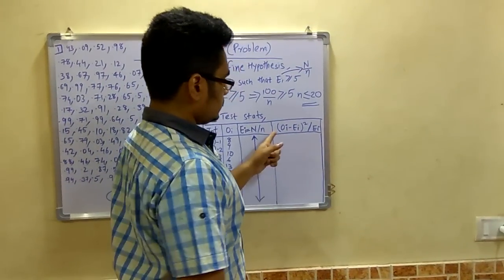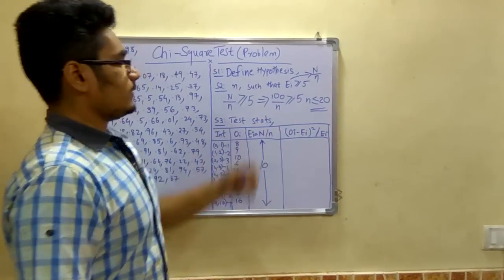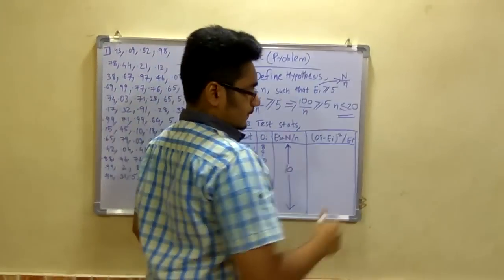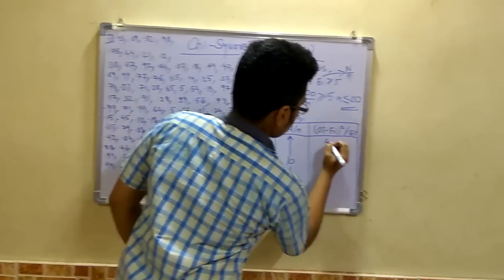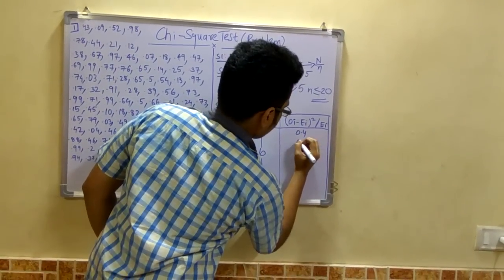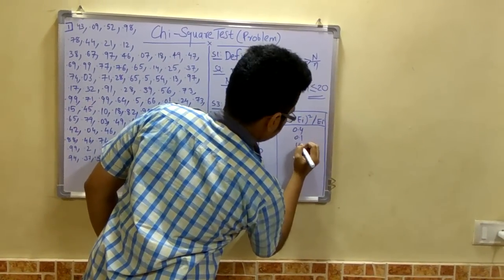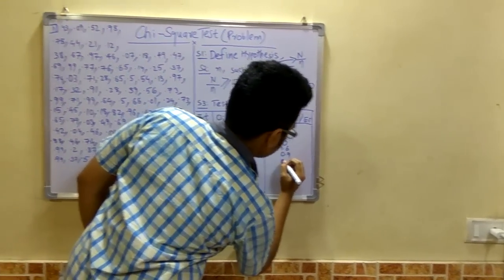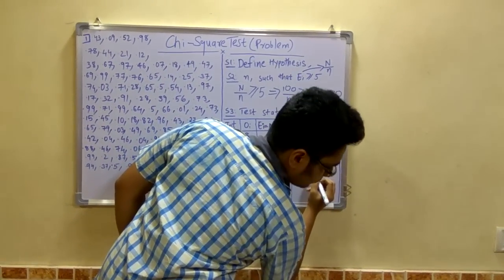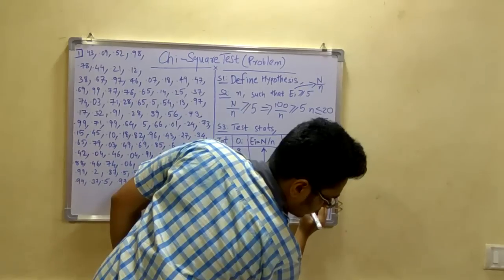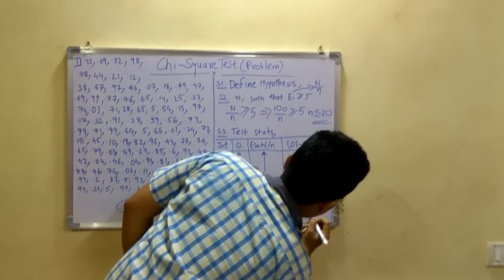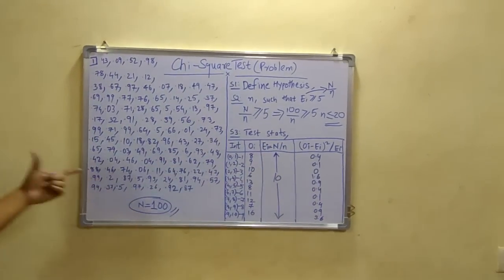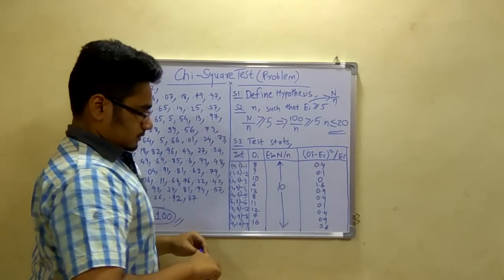Next we have to calculate this (oi minus ei) squared upon ei. This is the formula of chi-square test as you can see in the previous algorithm. So I will write it: 0.4, 0.1, 0, 1.6, 0.9, 0.4, 0.1, 0.4, 0.9, 3.6. Now after you make this table you have to sum up all these values.